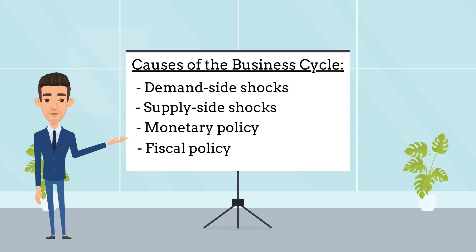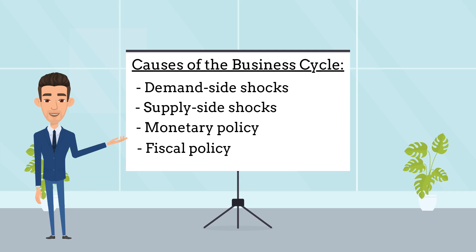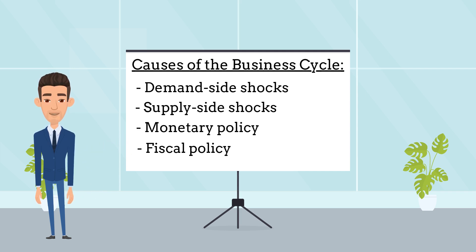Next, I will go through briefly the causes of the business cycle. The business cycle is driven by a combination of demand-side and supply-side factors, including demand-side shocks — these are sudden changes in consumer or business spending that can cause a shift in economic activity. For example, a recession or financial crisis can cause a decrease in consumer spending, leading to a contraction in economic activity.